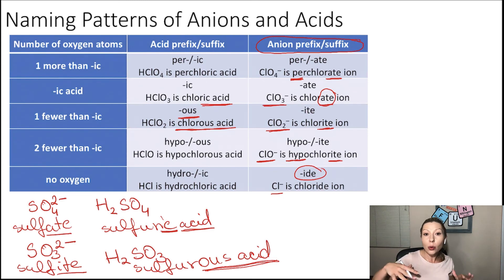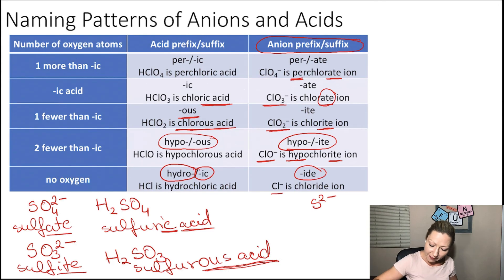If I go lower with the number of oxygen atoms and I get to the hypo--ite ions, then I'm going to have a hypo--ous acid, so hypochlorous acid for hypochlorite ion. And if I don't have an oxygen atom, then I'm going to have a hydro- prefix and then -ic suffix. So in case of the chloride ion, I'm going to have hydrochloric acid. With the sulfide ion, which is S2-, the H2S acid would be called hydrosulfuric acid.